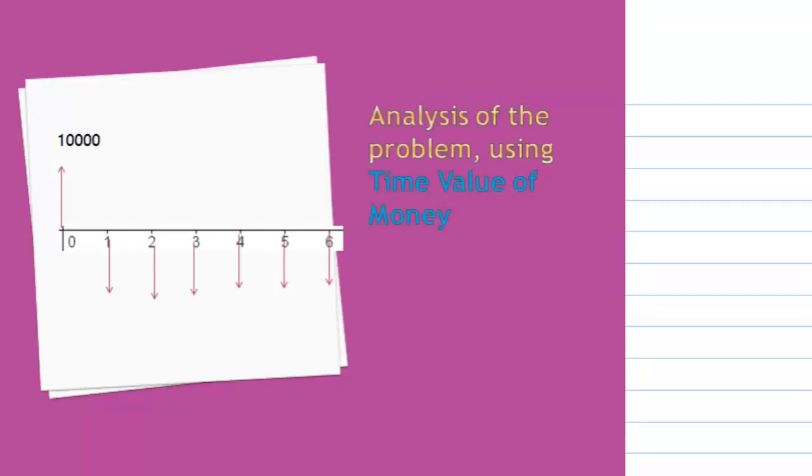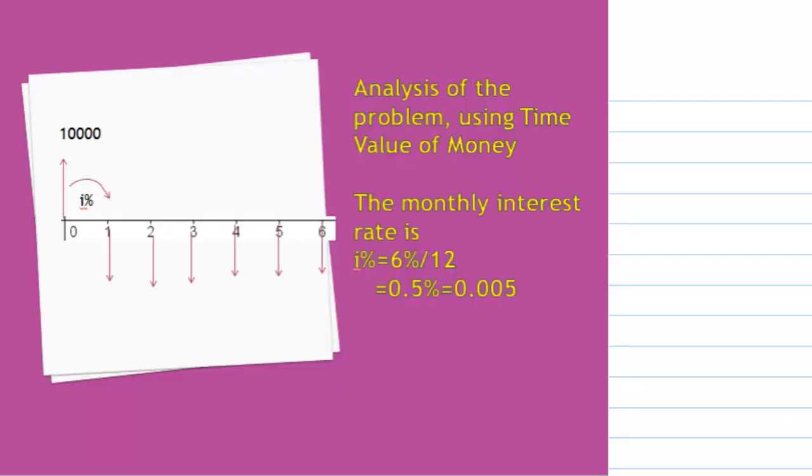Back to the problem. Initially, $10,000 is deposited into your bank account, so the cash flow is positive. The monthly interest rate is I%, which is 6% over 12, or 0.5%, which is 0.005.